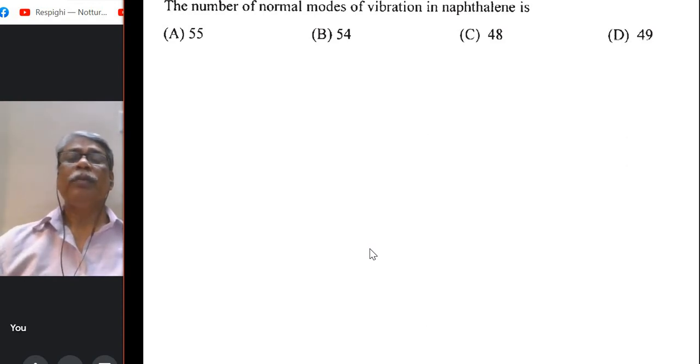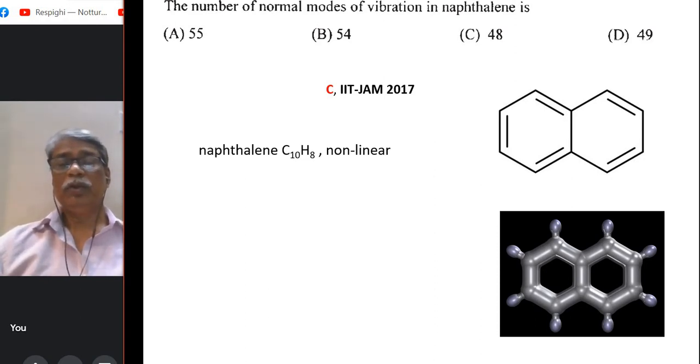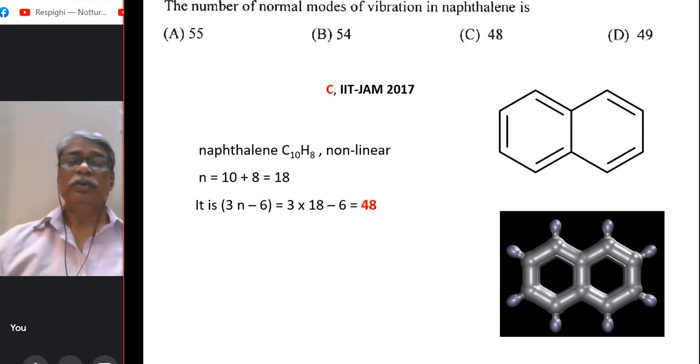The number of normal modes of vibration in naphthalene. You have to know the structure or molecular formula of naphthalene and this is given here, the molecular formula C₁₀H₈. For an n atomic non-linear molecule here n is 10 plus 8 = 18. So it is 3n - 6 because it is non-linear. So 3 × 18 - 6 = 48.